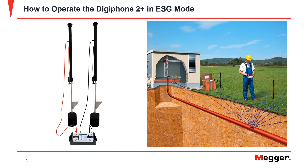In order to locate a sheath fault and buried cable, a DC pulse generator is connected to the faulted cable and sends a DC pulse to the fault. The pulse dissipates through the ground surrounding the faulted area of the cable. The two measuring probes from the ESG are used to measure the step voltage and indicate the direction that the fault is in.